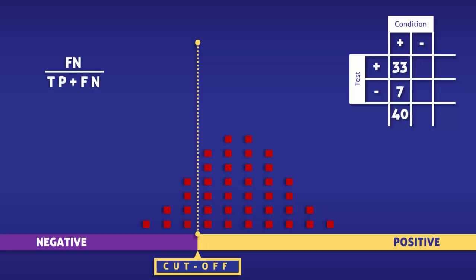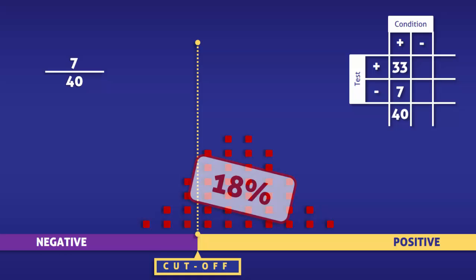Now all we have to do is key the information into the equation. Doing so, we find that the false negative rate is 7 over 40, which is 18%.